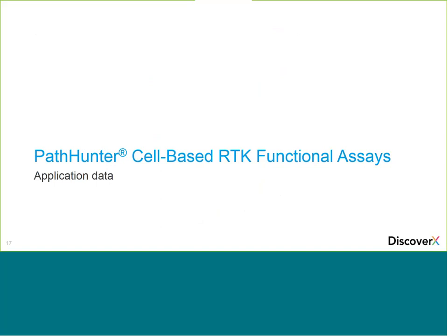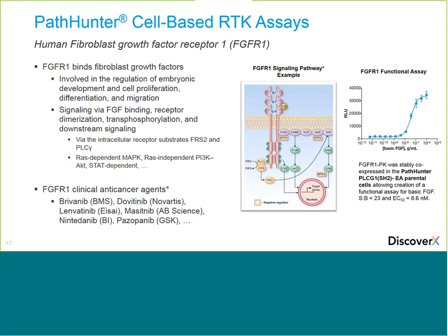The first application example is FGFR1, or fibroblast growth factor receptor, involved in embryonic development and cell proliferation. Its endogenous ligand FGF binds the receptor, causing dimerization, transphosphorylation, and downstream signaling via RAS-dependent MAP kinase or STAT-dependent pathways. Using the PLC gamma parental cell line, the assay achieved a signal-to-background of 23 and an EC50 of about 8.6 nanomolar. Several ligands and drug candidates in development for FGFR are listed for reference.